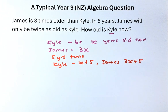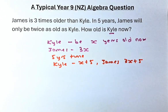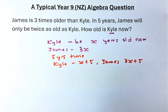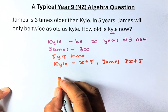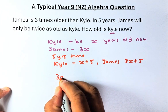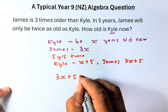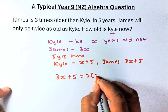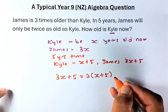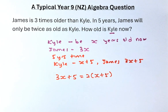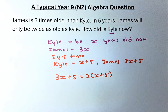Now we are going to form the equation. In 5 years time, James will only be twice as old as Carl. James is 3X plus 5, so we write: 3X plus 5 equals 2 times (X plus 5), because James is going to be 2 times older than Carl.